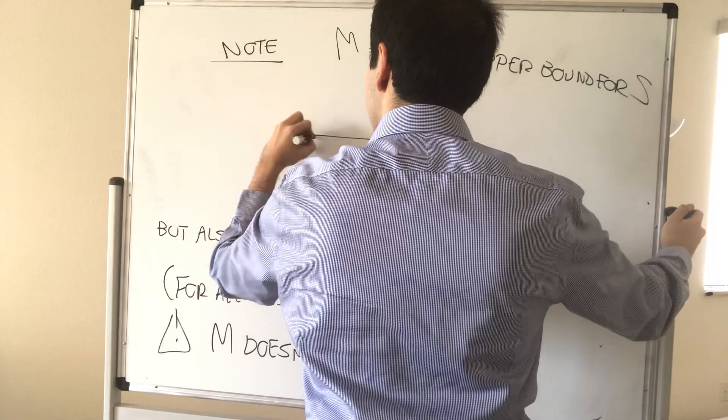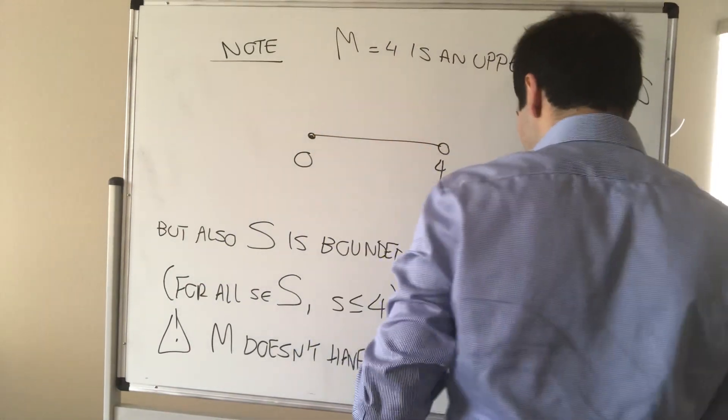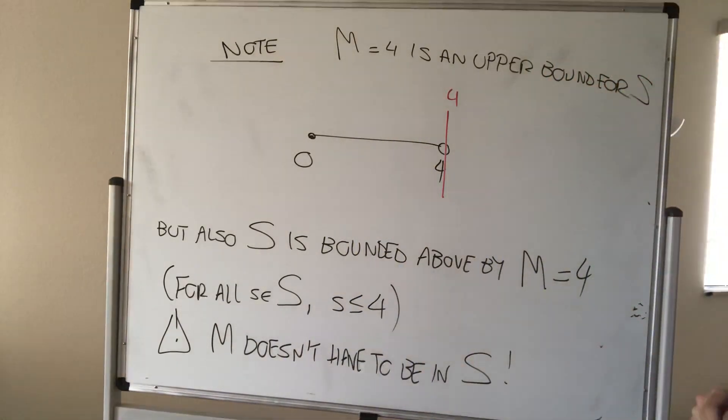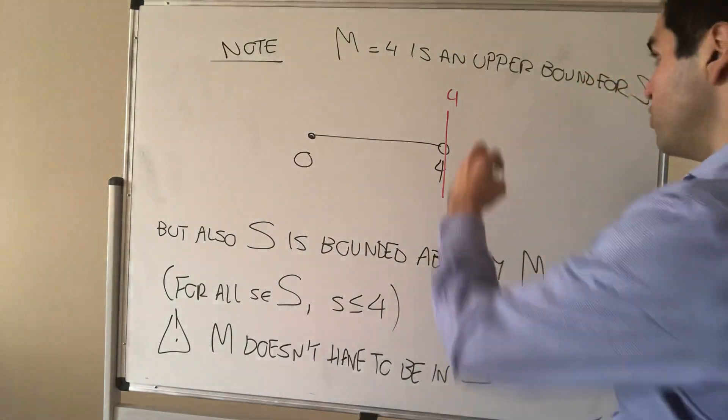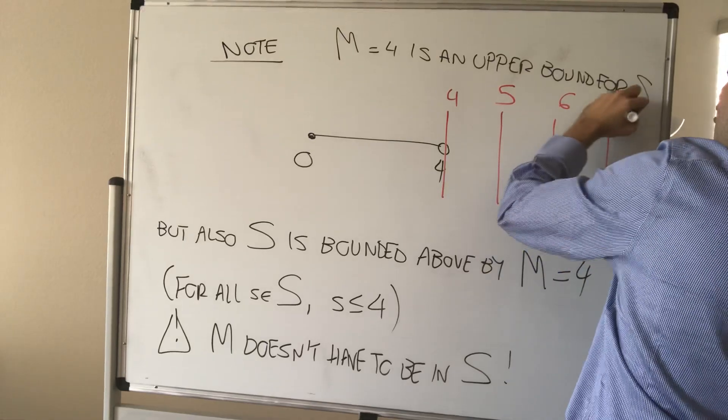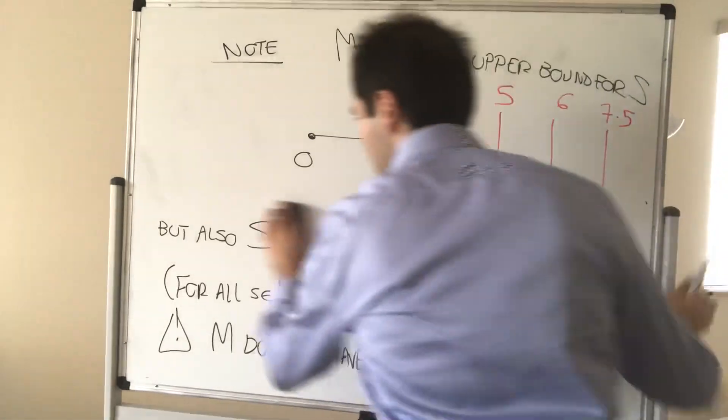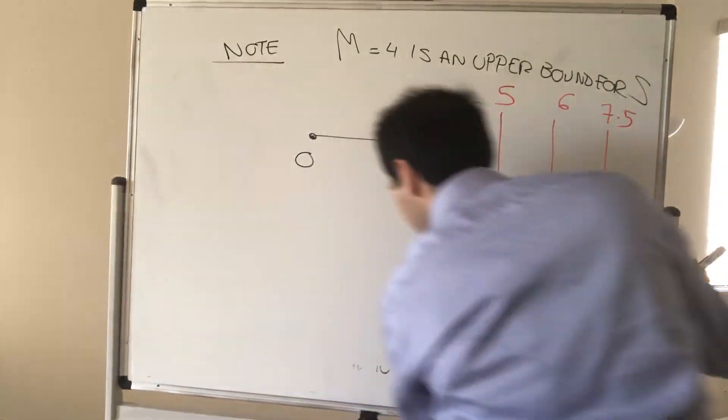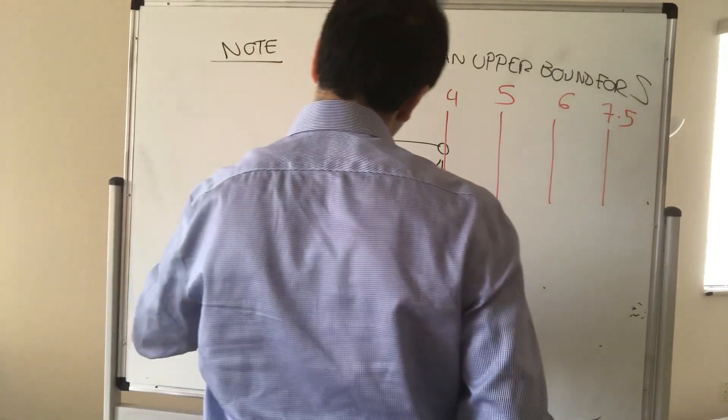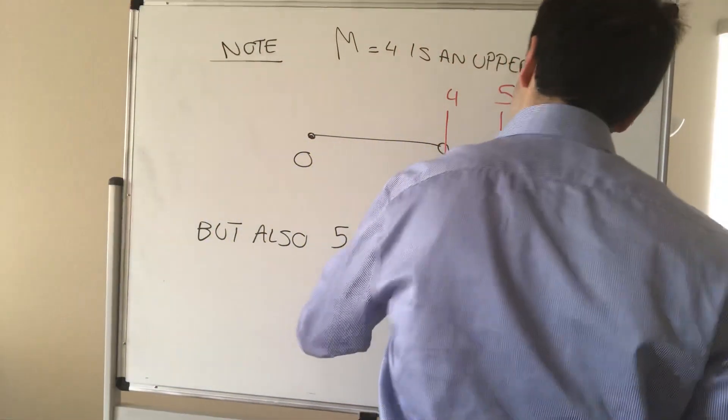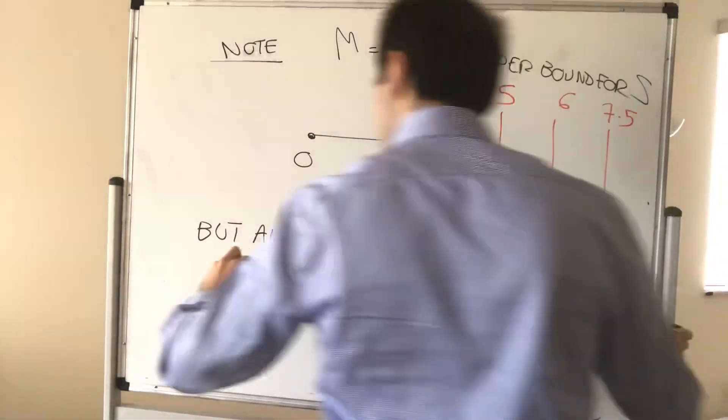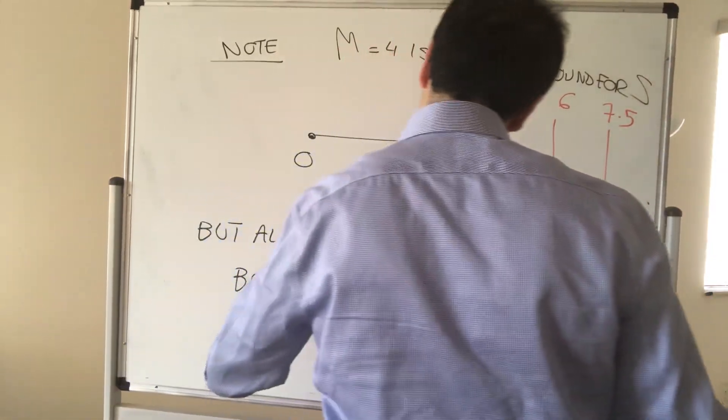So again, let me draw this picture again. So this is zero and this is four, and we found that four is an upper bound for S. But there are actually many other upper bounds because you could also take five or six or let's say seven and a half. But also five, six, seven and a half are upper bounds for S.